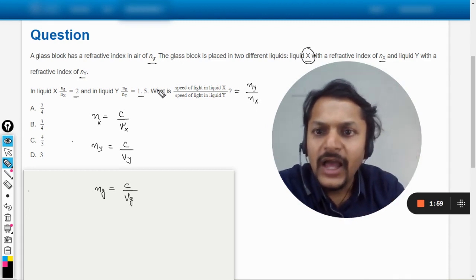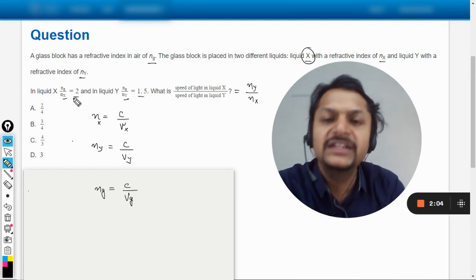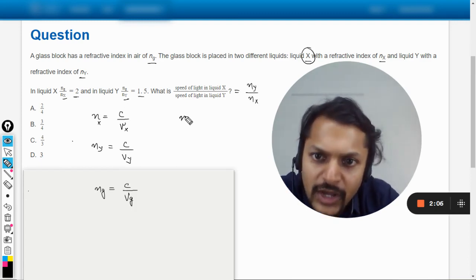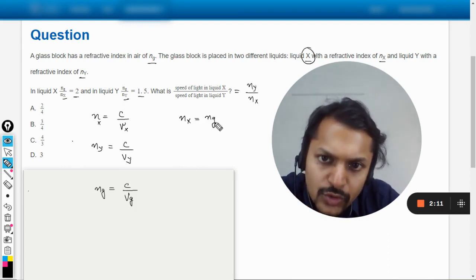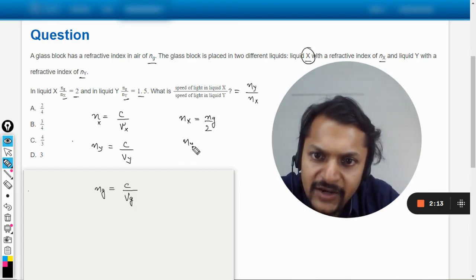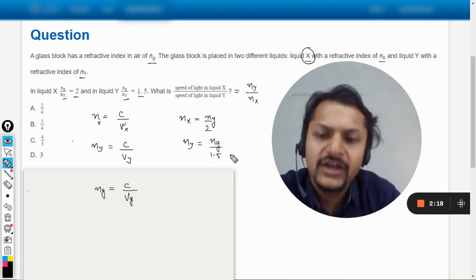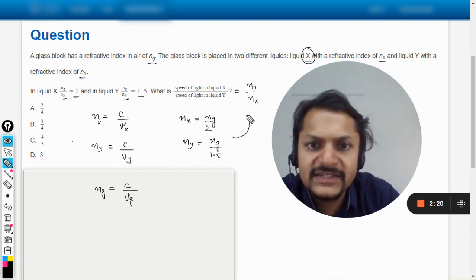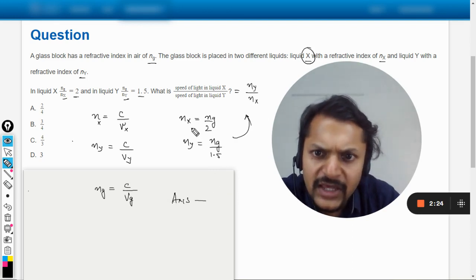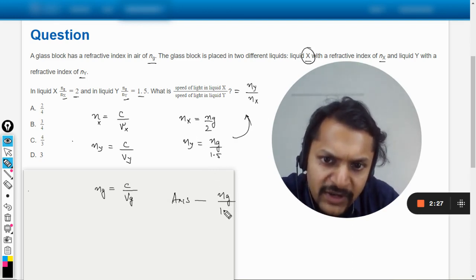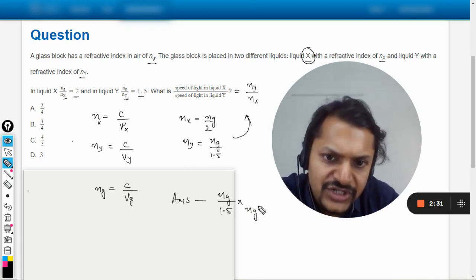Things should be clear till now. What about NY and NX? We can find the value of NY and NX from here in terms of NG. So NX can be taken as NG/2 and NY can be taken as NG/1.5. And we can just now replace these things here.